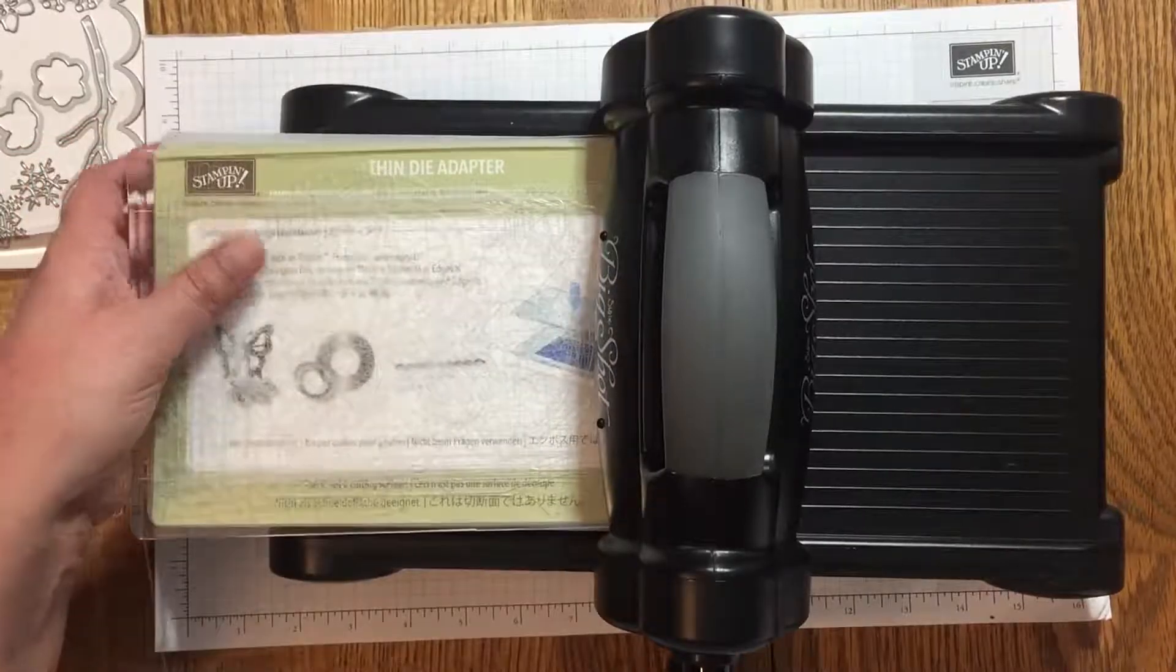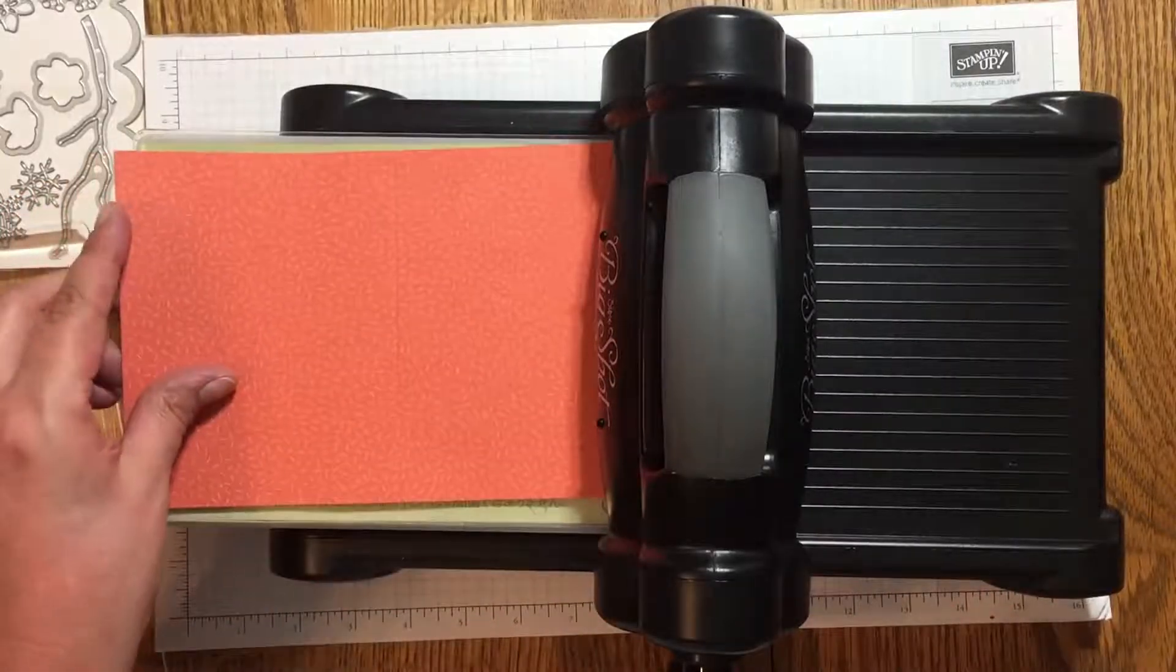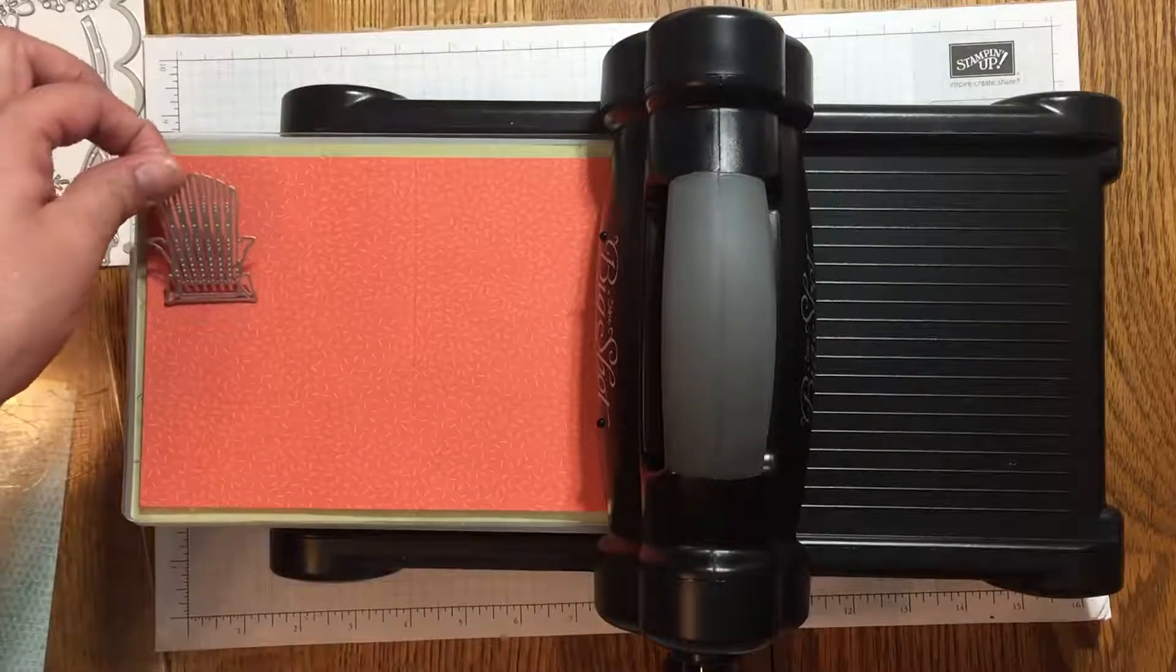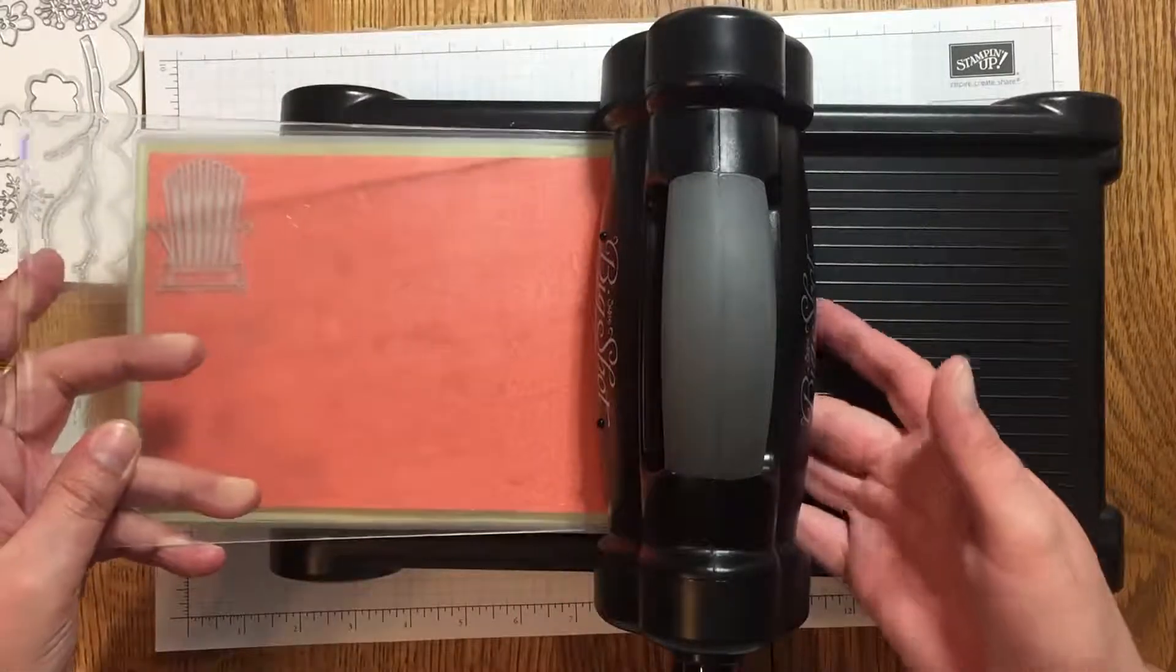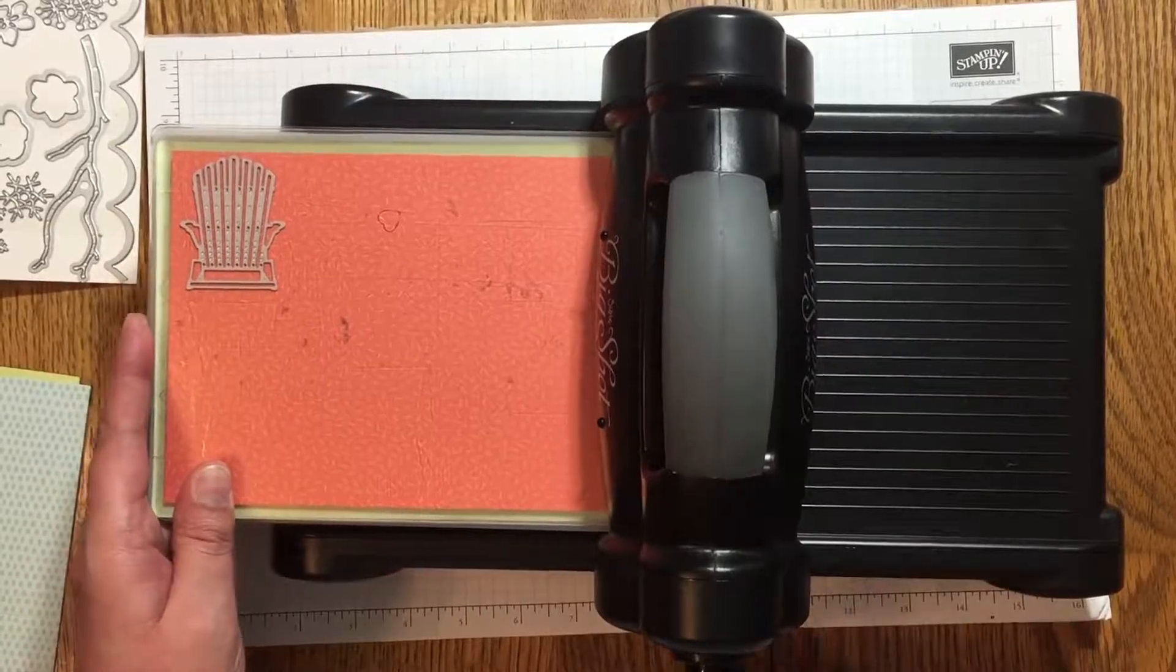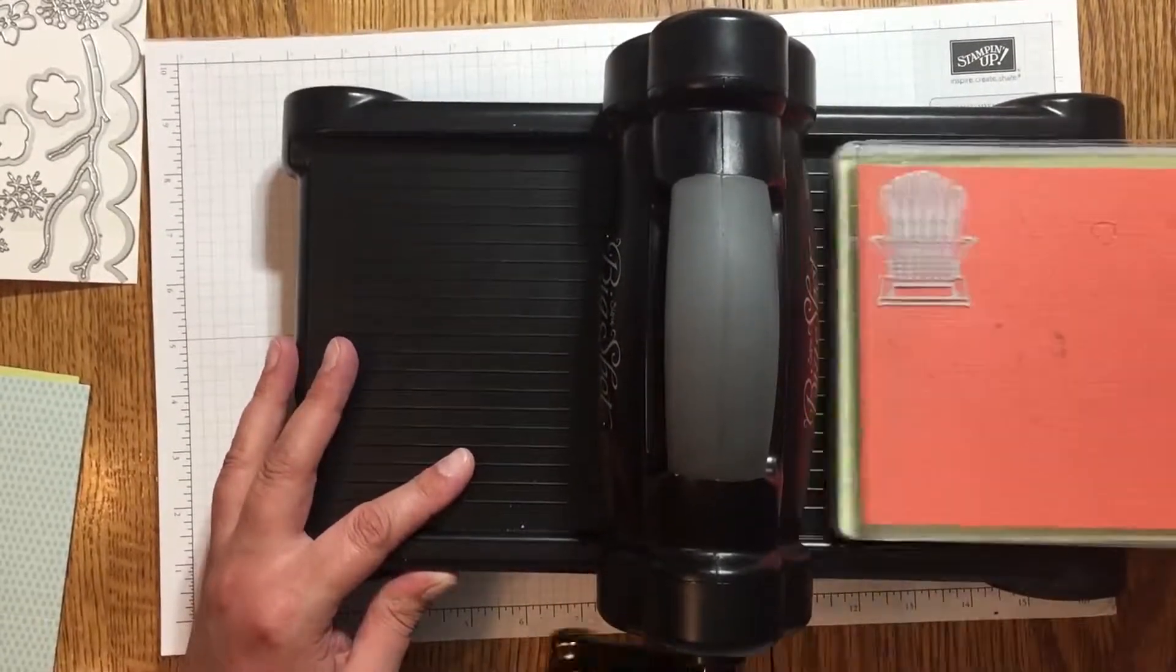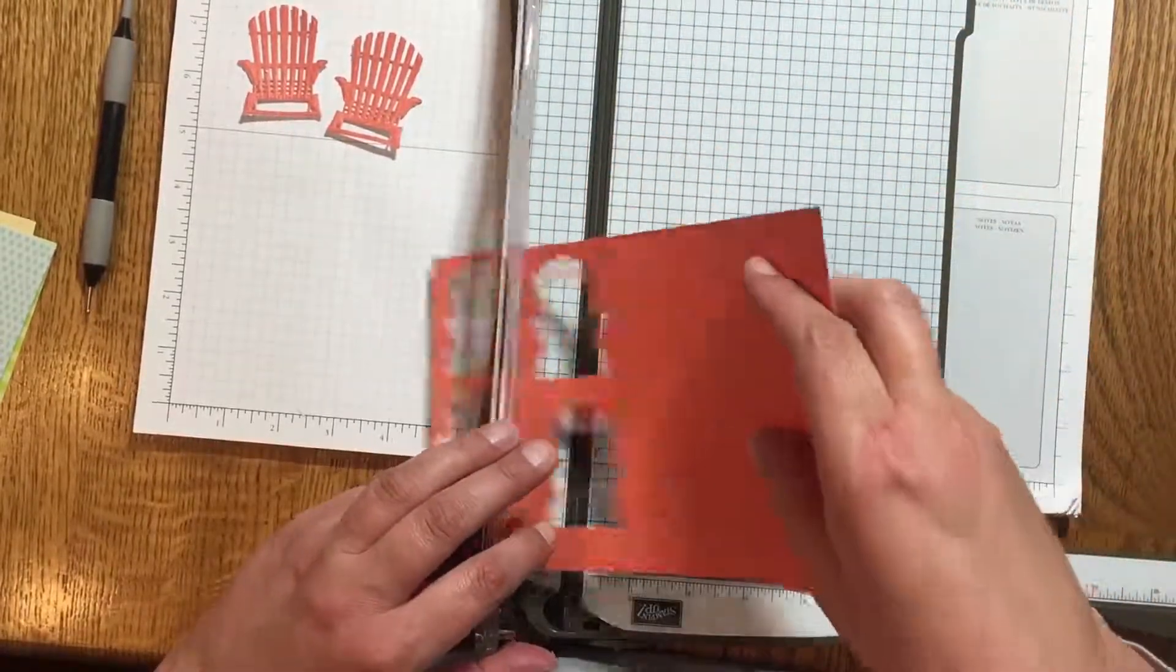In terms of the plate stack, just lay the thin die adapter on top of the basic platform, then lay the first cutting plate on top, then layer your cardstock on top of the cutting plate and lay your die on top of the cardstock and position it where you want it. Once you have your die where you want it, lay the second clear plate on top of the whole stack and you're ready to cut.